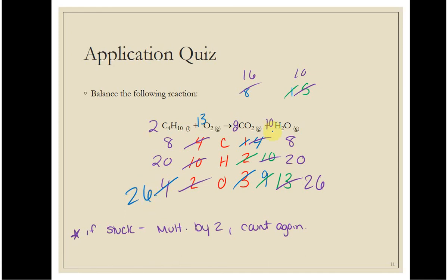At this point these look like pretty big numbers, but there's nothing I can divide here to get a smaller set — it's not like 2, 14, 8, and 10 where they could all be divided by two. This is the smallest whole number ratio. So this balanced equation reads: two C₄H₁₀ plus thirteen O₂ react to produce eight CO₂ and ten H₂O.